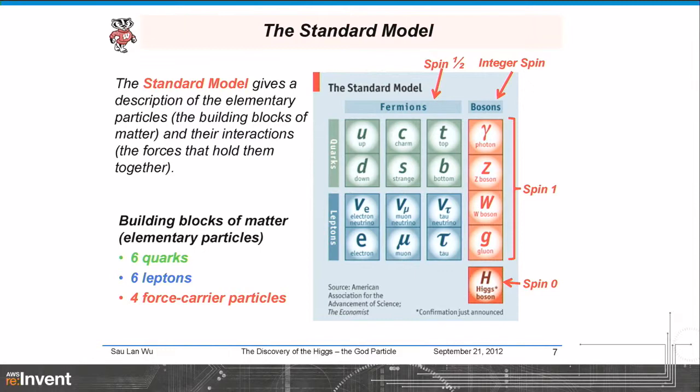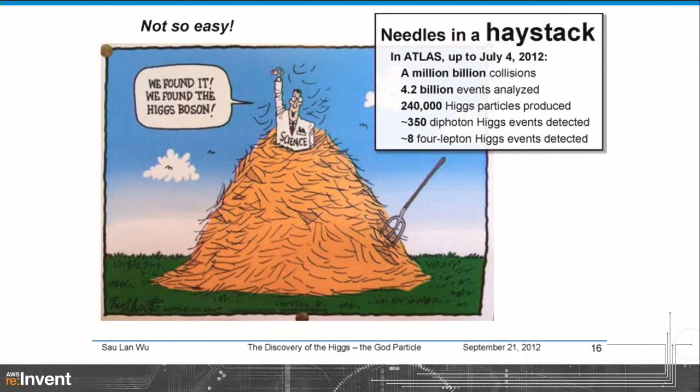It took these 6,000 scientists probably 20 years to conclude within five sigma that the particle is there. Just from the ATLAS experiment: they made millions of billions of collisions, recorded and analyzed about 4.2 billion events, expected about a quarter million Higgs produced, detected 350 in one form and 8 in another. This big conclusion is based on those 360 events that gave them the five sigma confirming the standard model is correct.